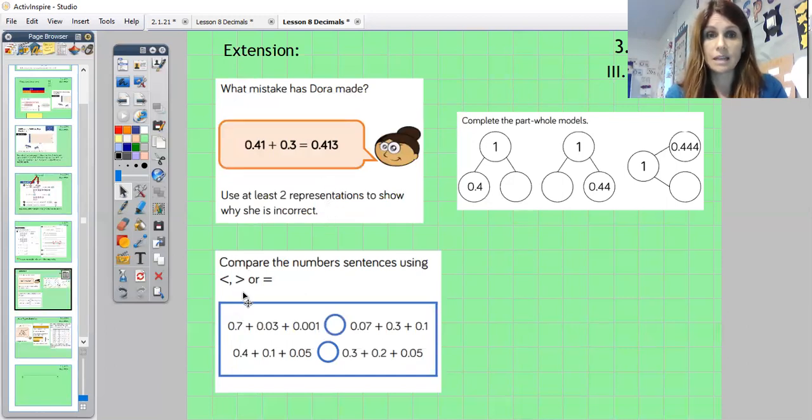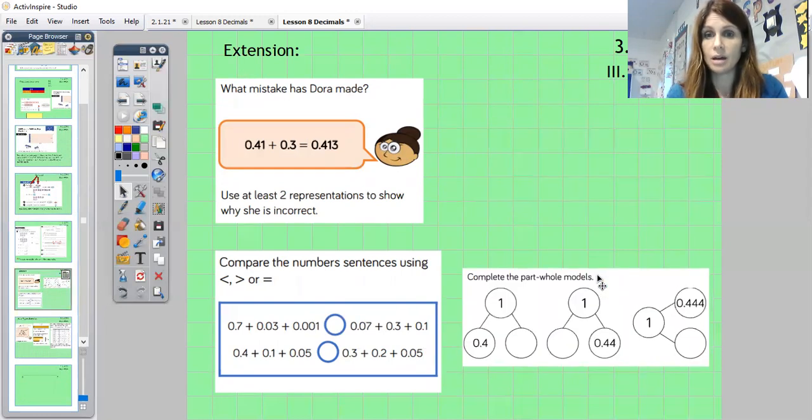The second one here, compare the number sentences using less than, more than, or equal to. So you have to work out these equations - you're working out what's on this side and then you're working out what's on this side, and then you need to put your answer in here. So the first thing you have to do is work this out, and I would write the number up here. Do the same on this side, work out what this would be added together and write the number up here, and then you can easily compare. So you do the same with the second one there. And then this one here, our part-whole model. So this is the whole, what would the parts be?